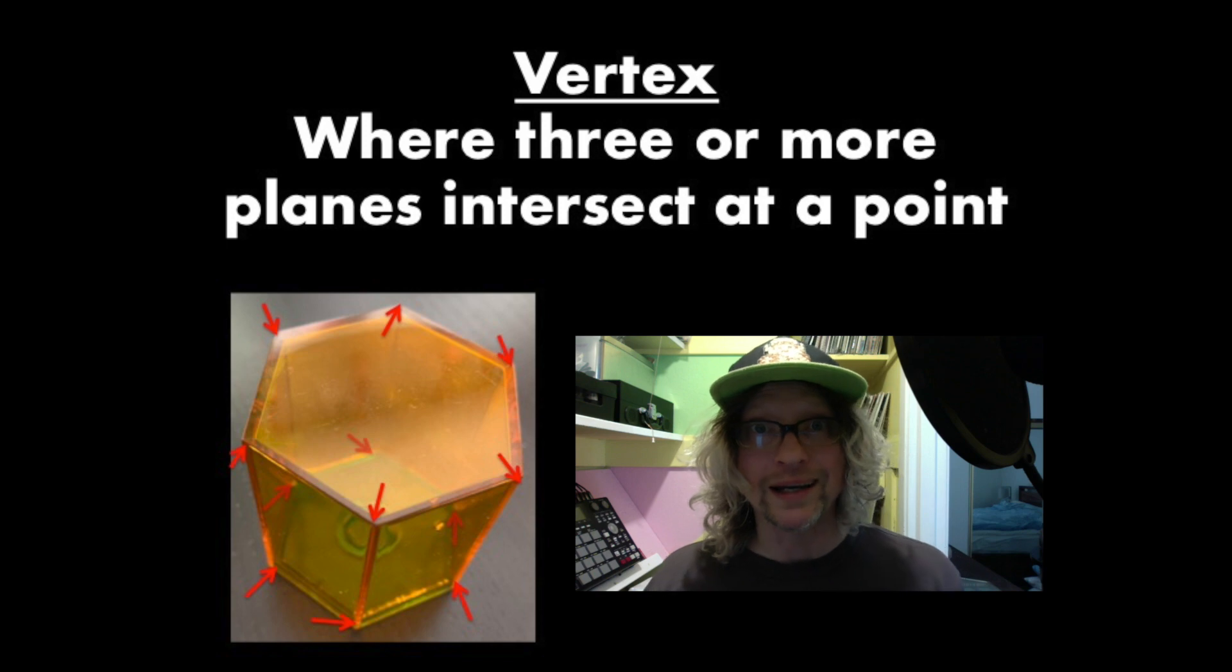Moving right along. Our next word is vertex. Vertex is where three or more planes intersect at a point. So you can see in the diagram next to me, I have pointed with arrows at the vertices. That is the plural for vertex, not vertexes, vertices.